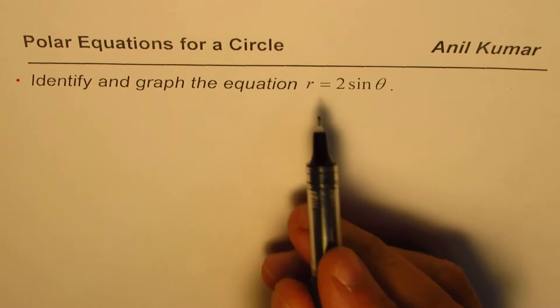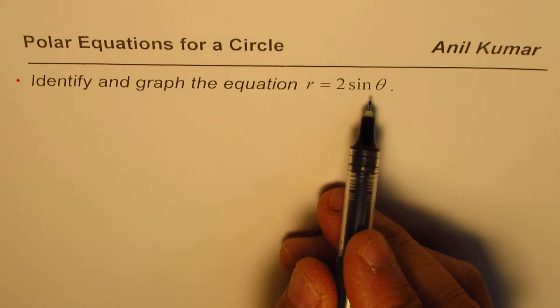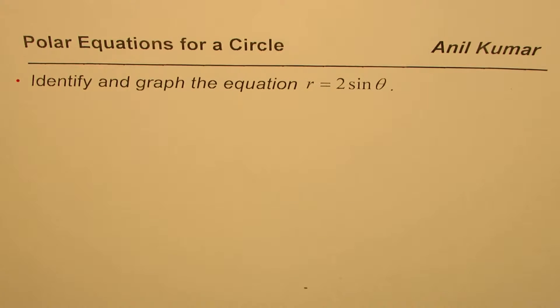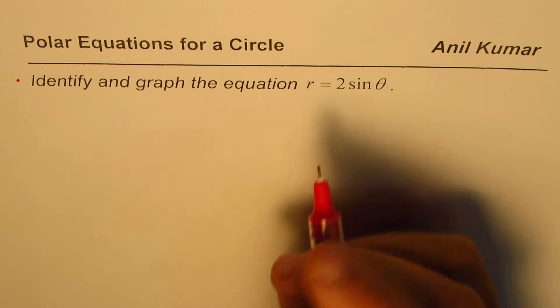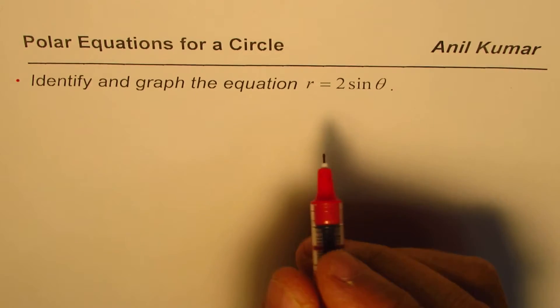Now r equals 2 sine theta is given to us as a polar equation. We need to identify what type of graph it can result into.